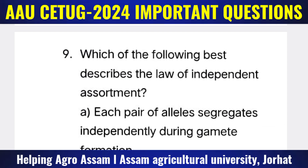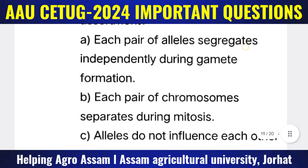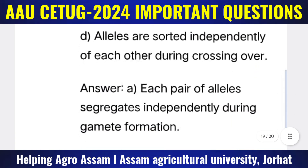Question 9: Which of the following best describes the law of independent assortment? Options: (A) Each pair of alleles segregates independently during gamete formation, (B) Each pair of chromosomes separates during mitosis, (C) Alleles do not influence each other during gamete formation, (D) Alleles are sorted independently during crossing over. The correct answer is option A.